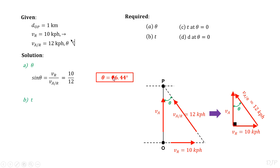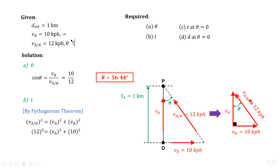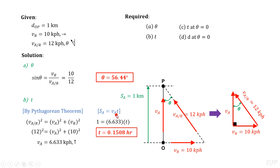Next, let's compute the corresponding time taken by the athlete to reach the other side. Since the width of the river is given, we can denote the absolute displacement of the athlete from point O to point P as S sub A equal to 1 km. Since displacement equals velocity times time, we need to solve first for the corresponding velocity to cover this displacement. Based on the figure, that should be V sub A since their vectors are aligned. Applying the Pythagorean theorem, we get the absolute velocity of the athlete equal to 6.633 kph upward. This gives us t equal to 0.1508 hours or 542.72 seconds.